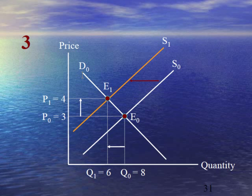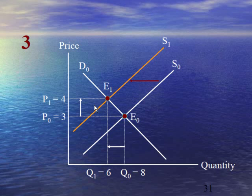Case number 3 explains there is no change or shift in demand curve, and the supply curve shifts towards the left, which represents a decrease or fall in supply. Due to this shift, the equilibrium point moves from E₀ to E₁. As a result, equilibrium price increases from 3 to 4 and equilibrium quantity decreases from 8 to 6.